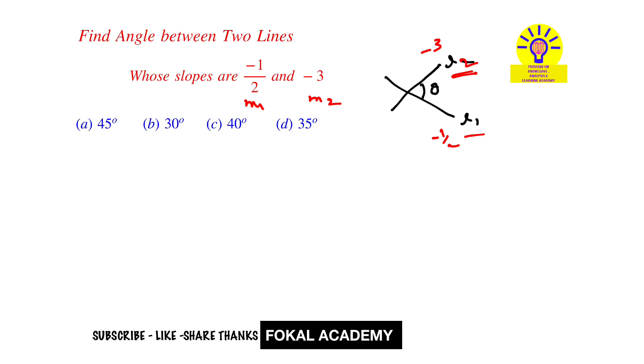Now we have a formula for finding the angle between any two lines whenever slopes are known. That is tan theta equals the modulus of m1 minus m2 upon 1 plus m1 into m2, where m1 and m2 are slopes.